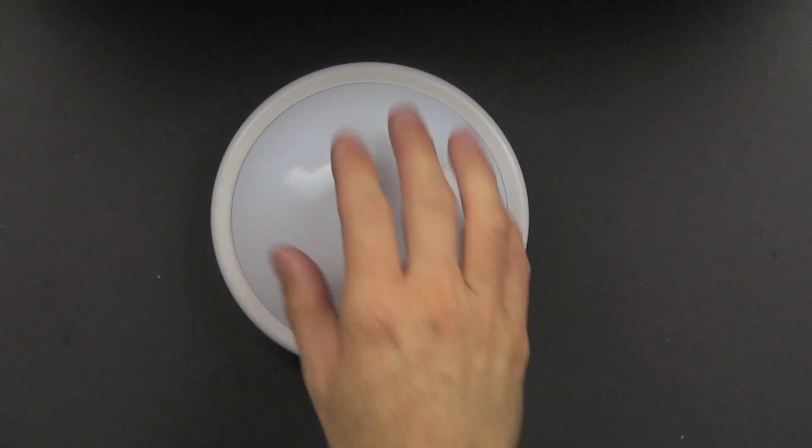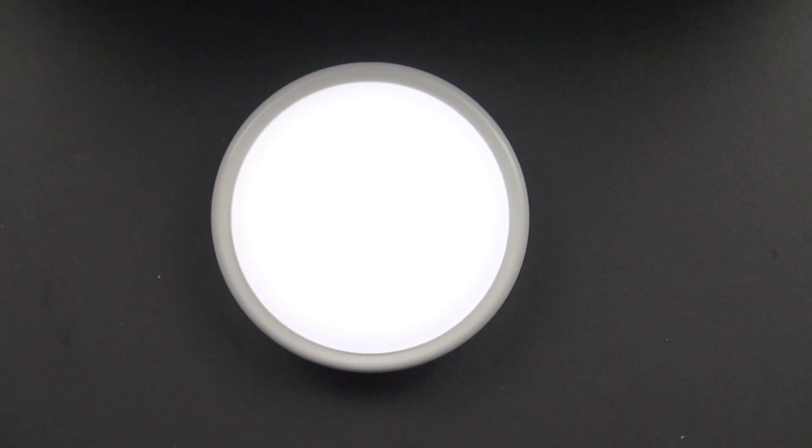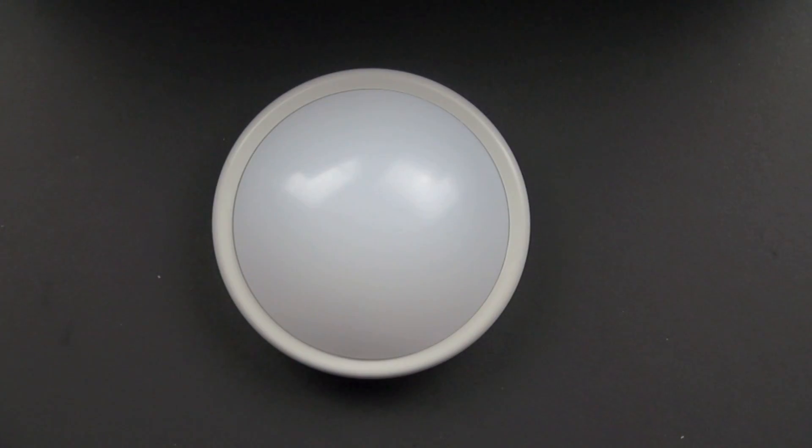So today we're going to take a look at the tap light. We're going to see what it's made out of and what's inside of it. You just push it and it lights up, produces a nice warm glow, and push it again to shut it off.